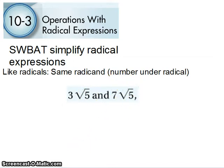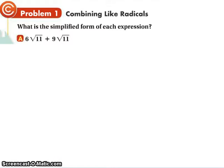Otherwise, we've got to do something else. So we have 6 root 11 plus 9 root 11. So 6 plus 9 is 15 root 11. We're just adding how many root 11s we have. Here we have 6 of them, here we have 9 of them, so we add them together.